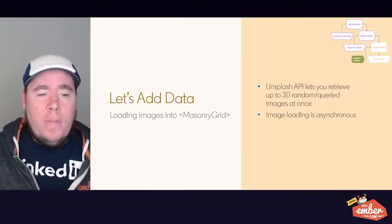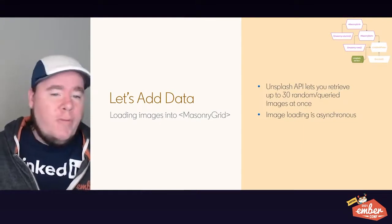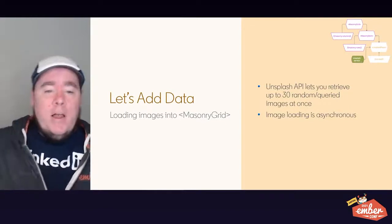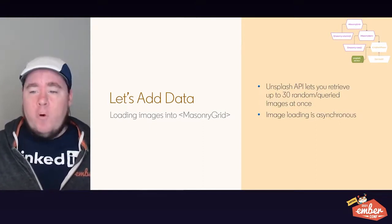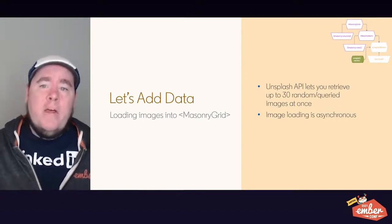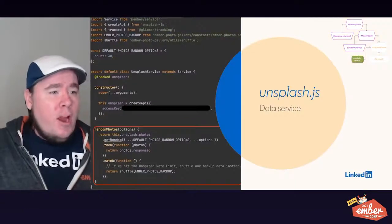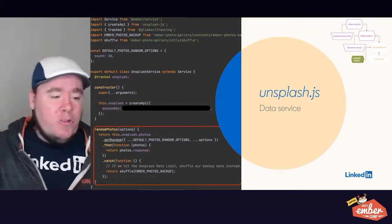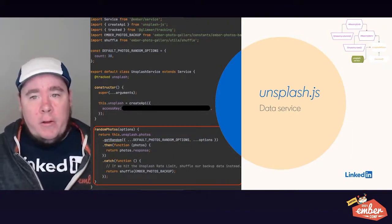Let's add some data to our masonry grid. I've used the Unsplash API, which allows me to retrieve up to 30 images at once. For this demo, I queried on the keyword 'Ember' — because why not? I'm also loading images asynchronously. Even though the API itself is asynchronous, we also have to account for the fact that once we set the URL on image elements, there is asynchronous loading of the image itself in the browser. The data service is mostly just interfacing with the Unsplash API, with a method that retrieves random photos and returns the response.